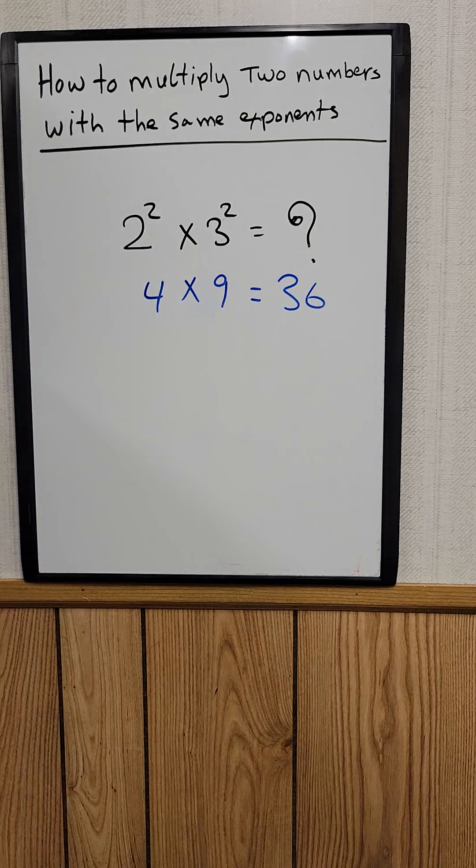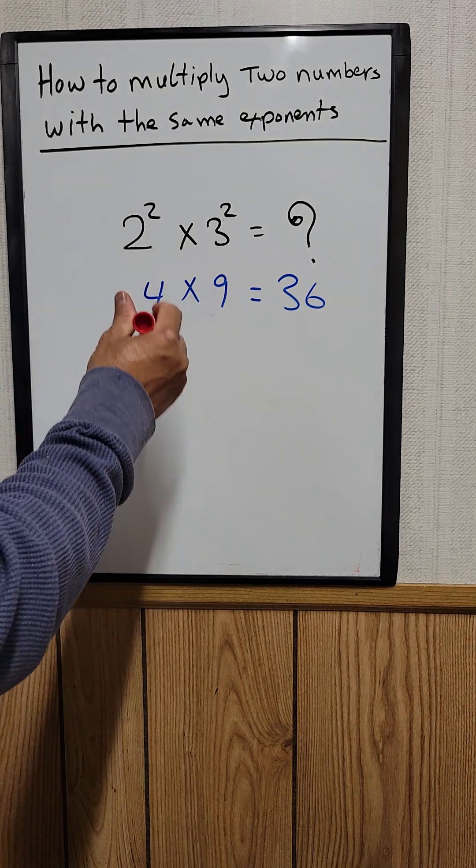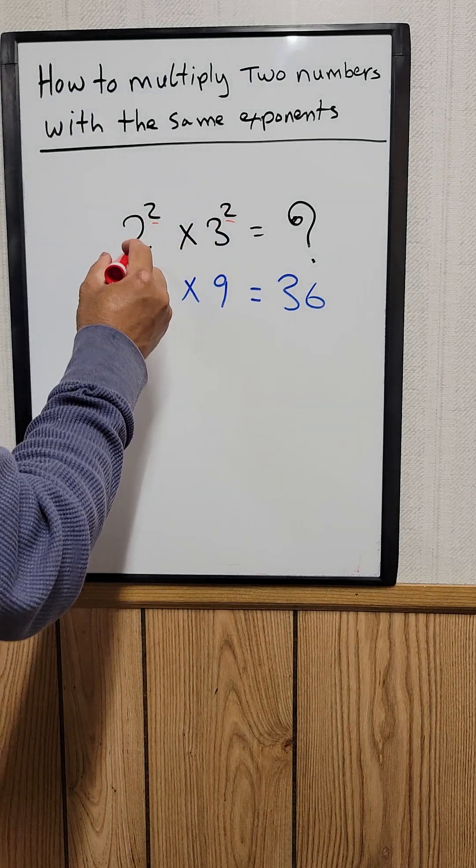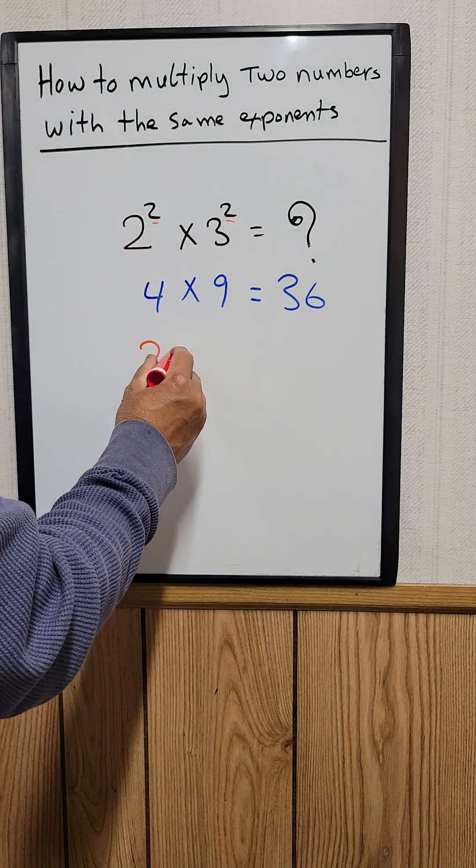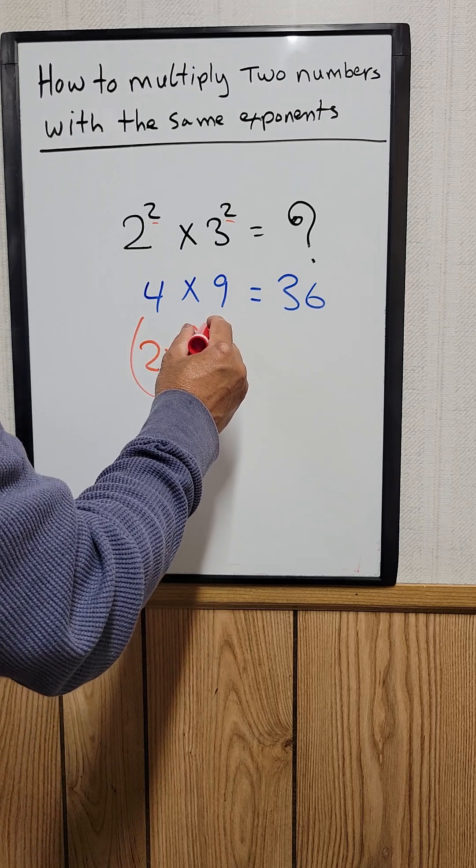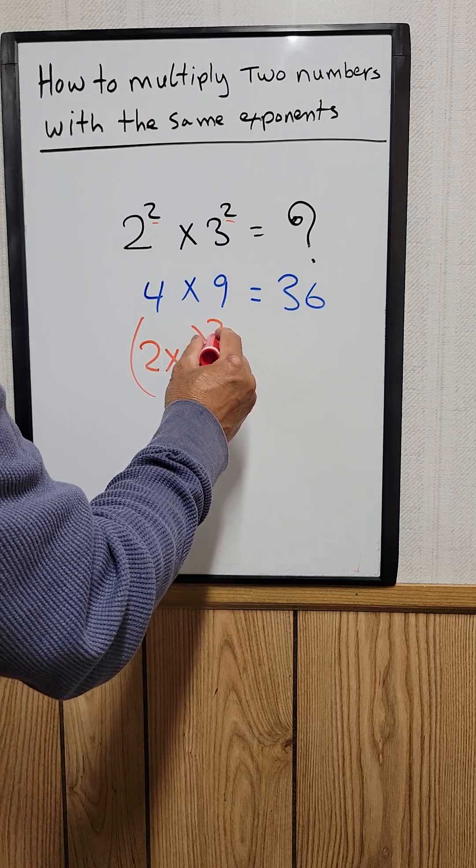But another way to do it would be, since both of them have the same exponent, what you can do, you can take the 2 times the 3 and then raise to the second power.